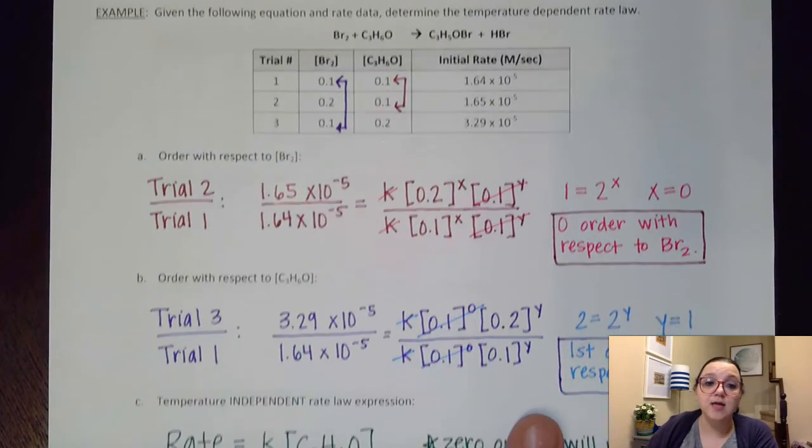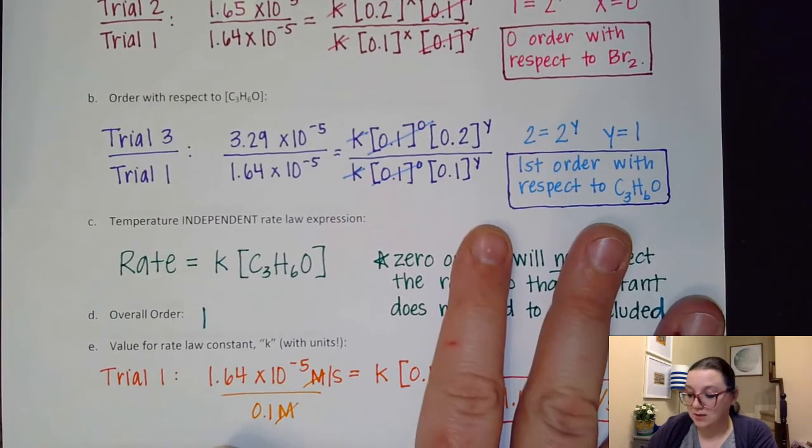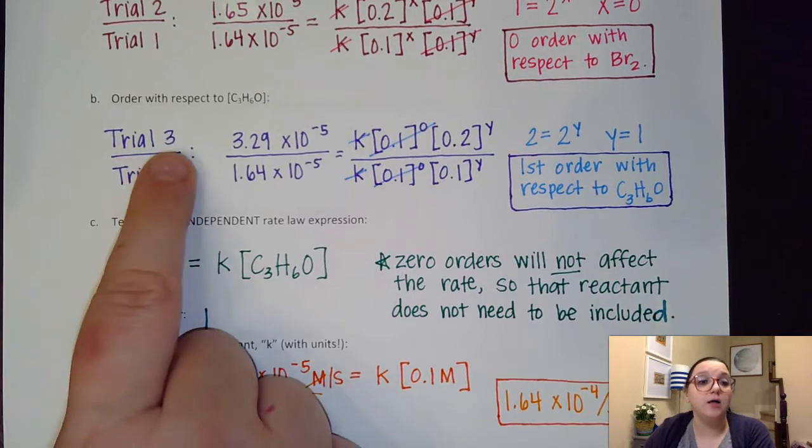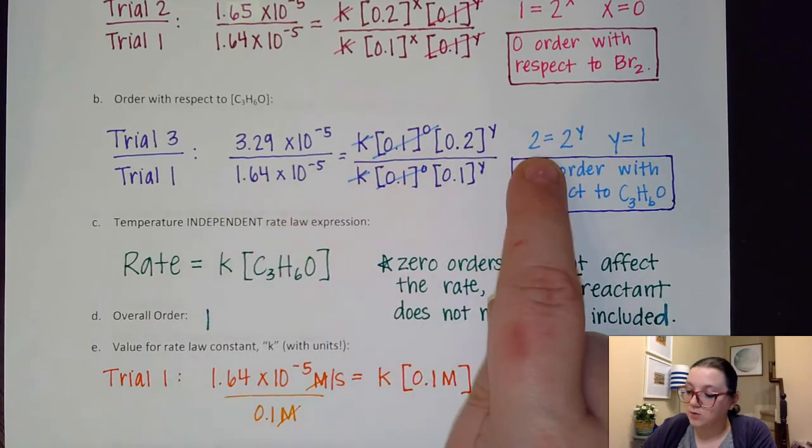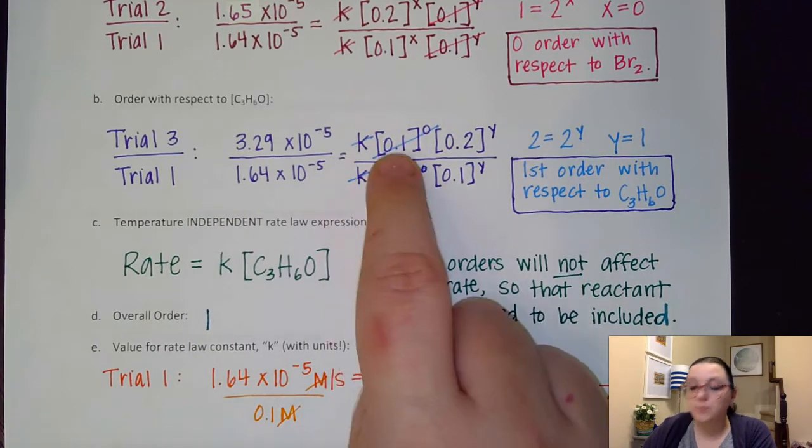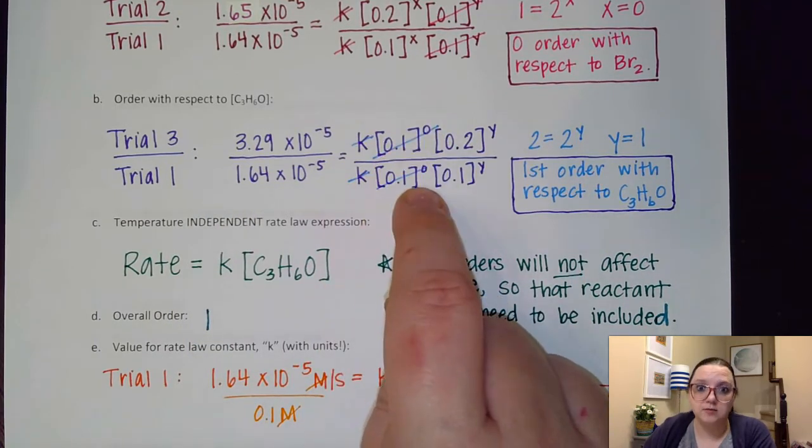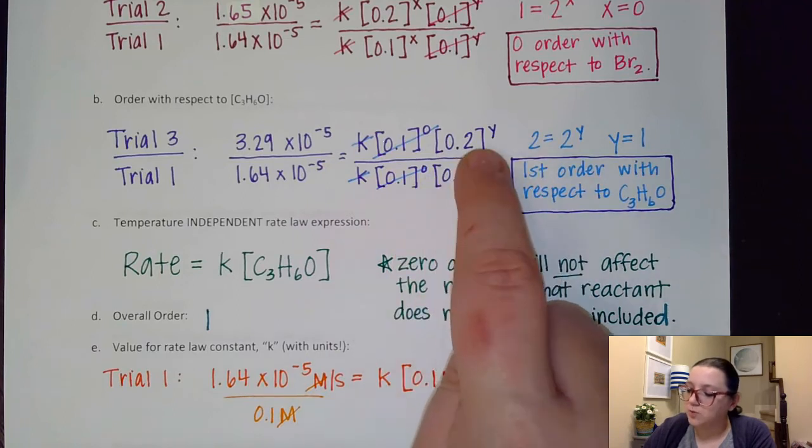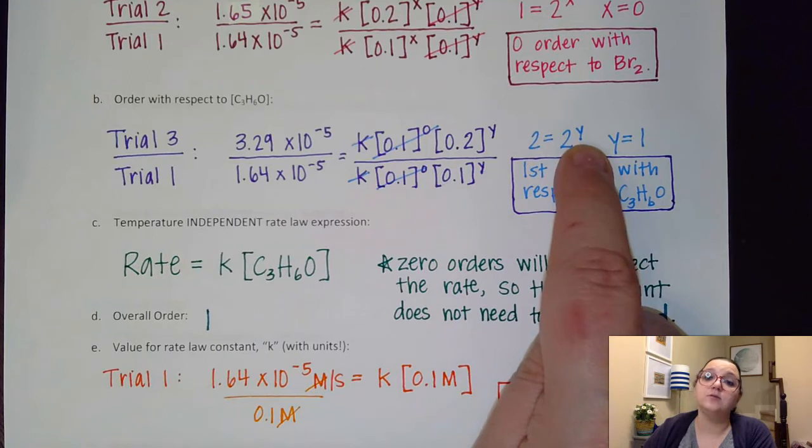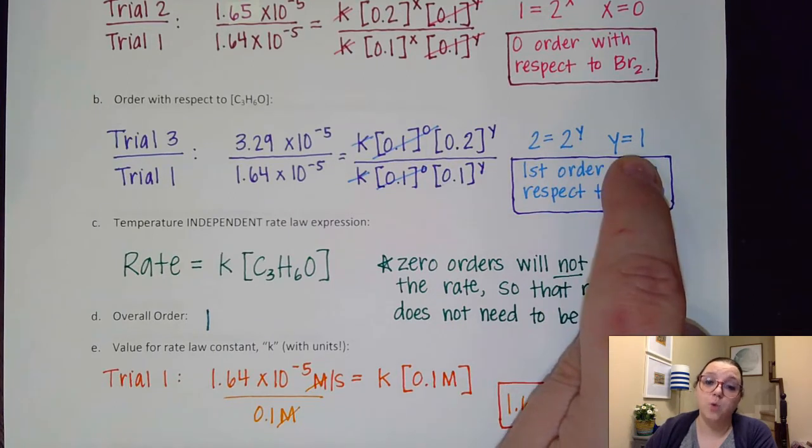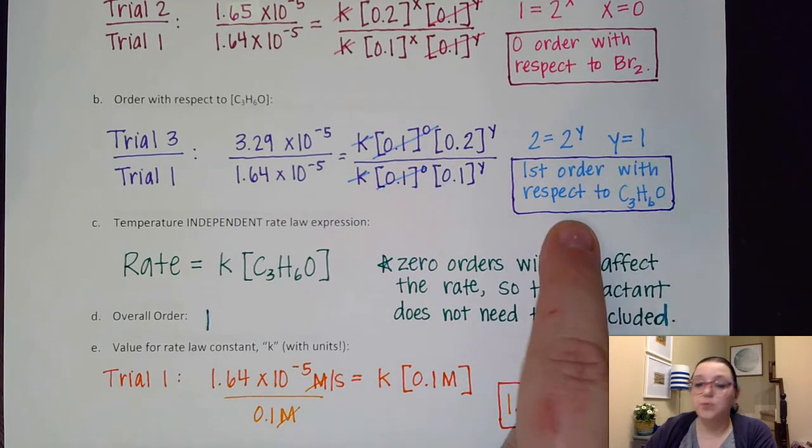Now C3H6O, on the other hand, when I solve it, I did trial 3 over trial 1. When I solved this math right here, that got a value of 2. K and the 0.1 to the 0 both canceled out here. And so 0.2 over 0.1 is 2, and that would be raised to the order of y. And so therefore here y equaled 1. So this was first order with respect to the C3H6O.